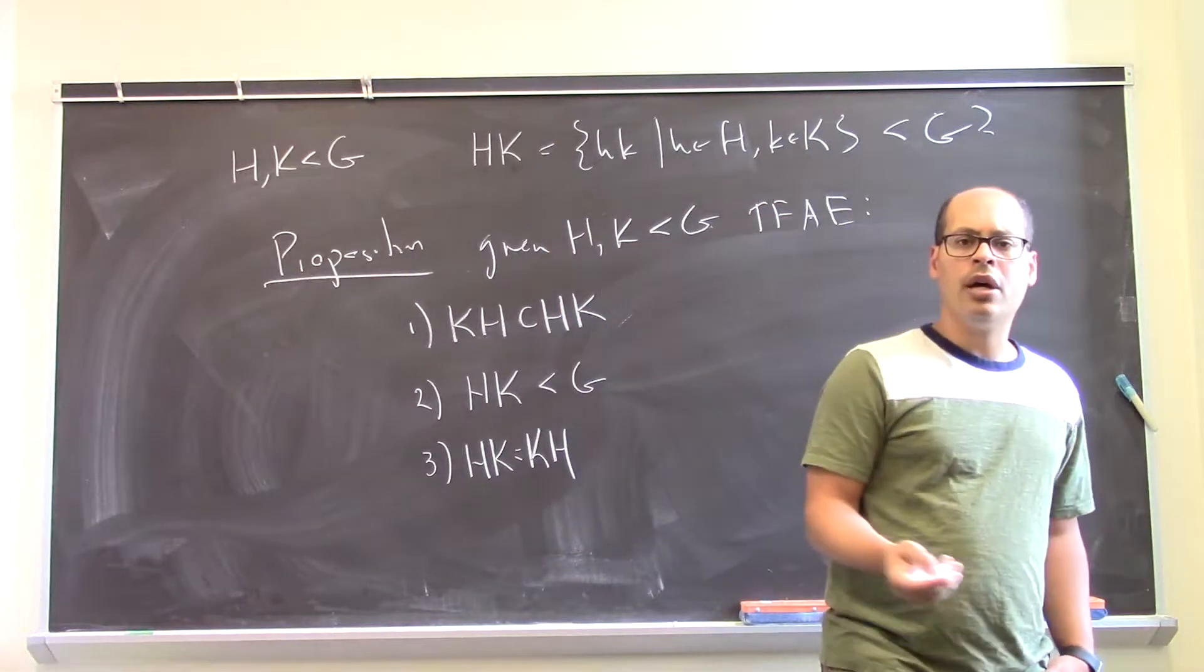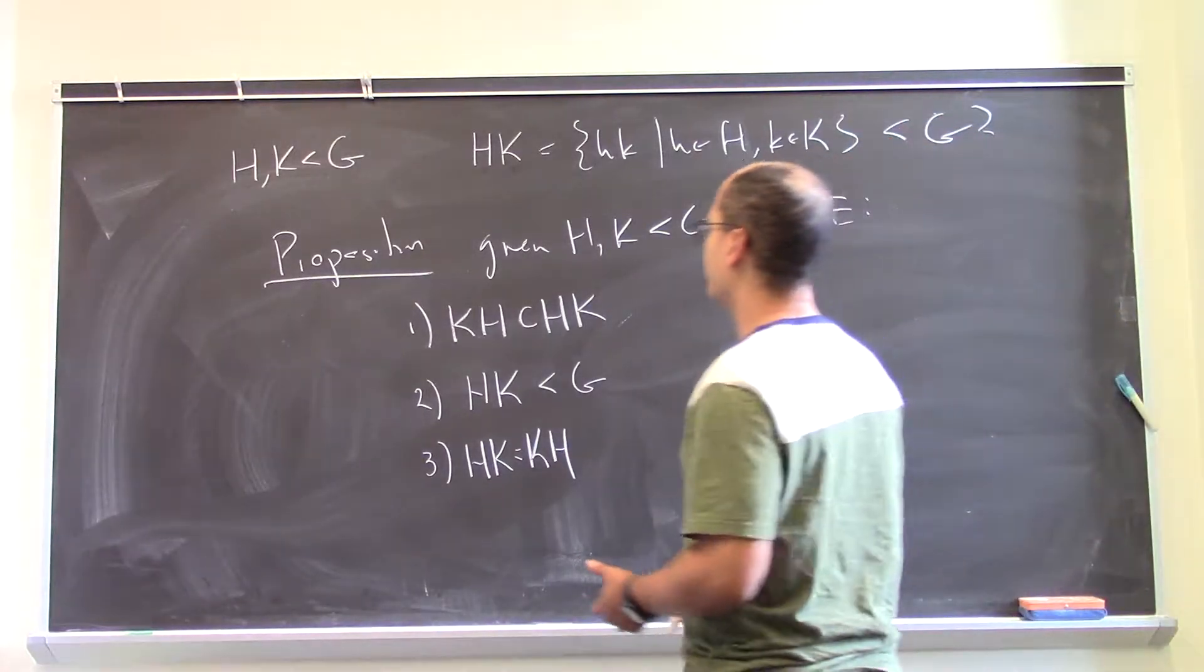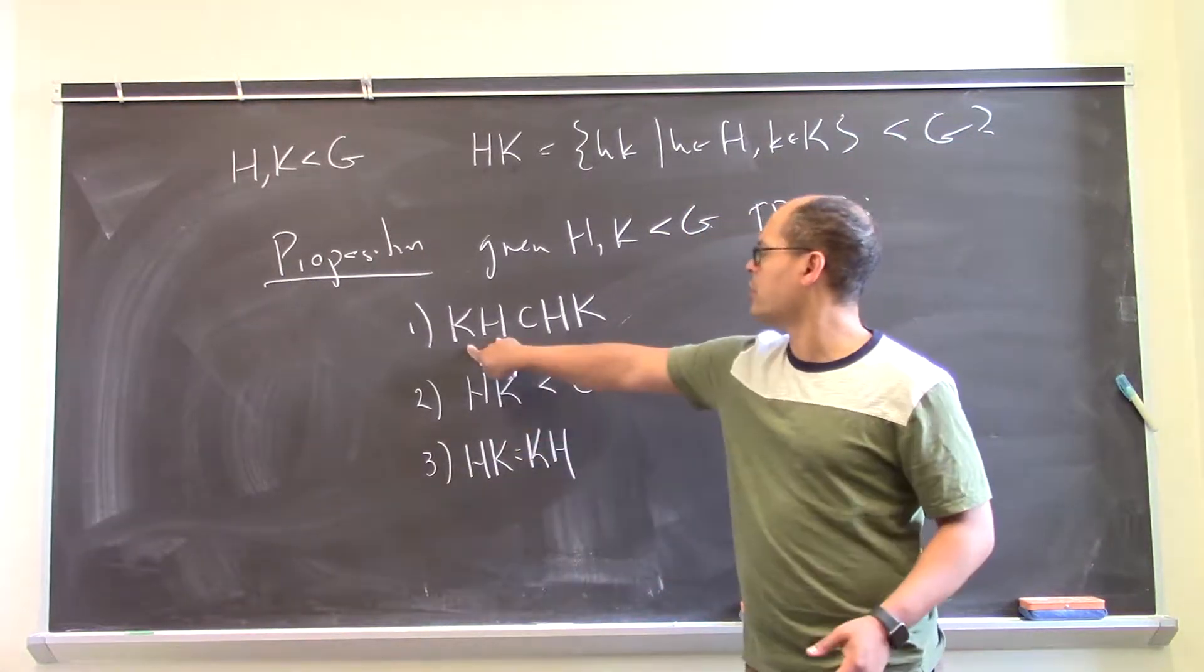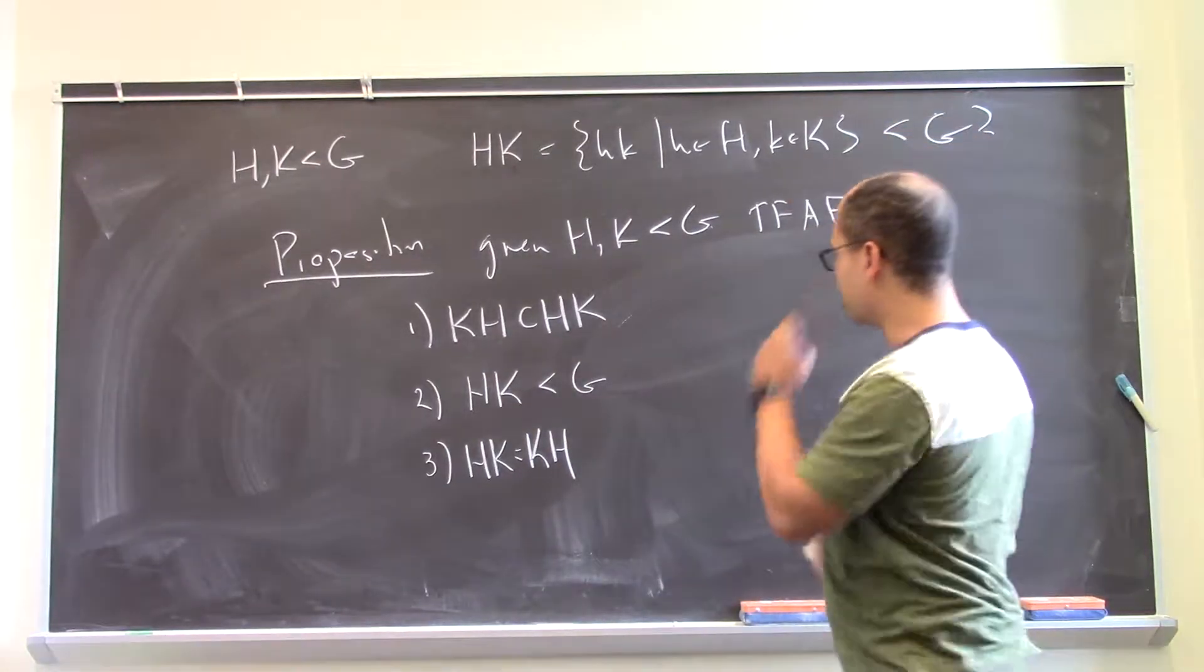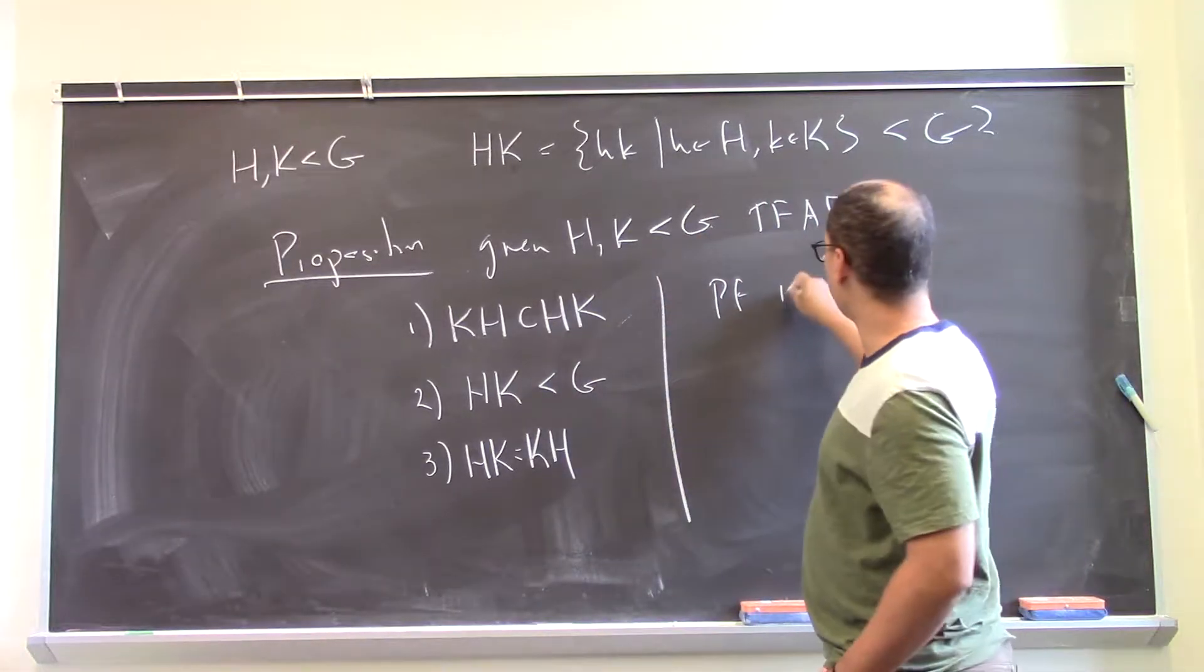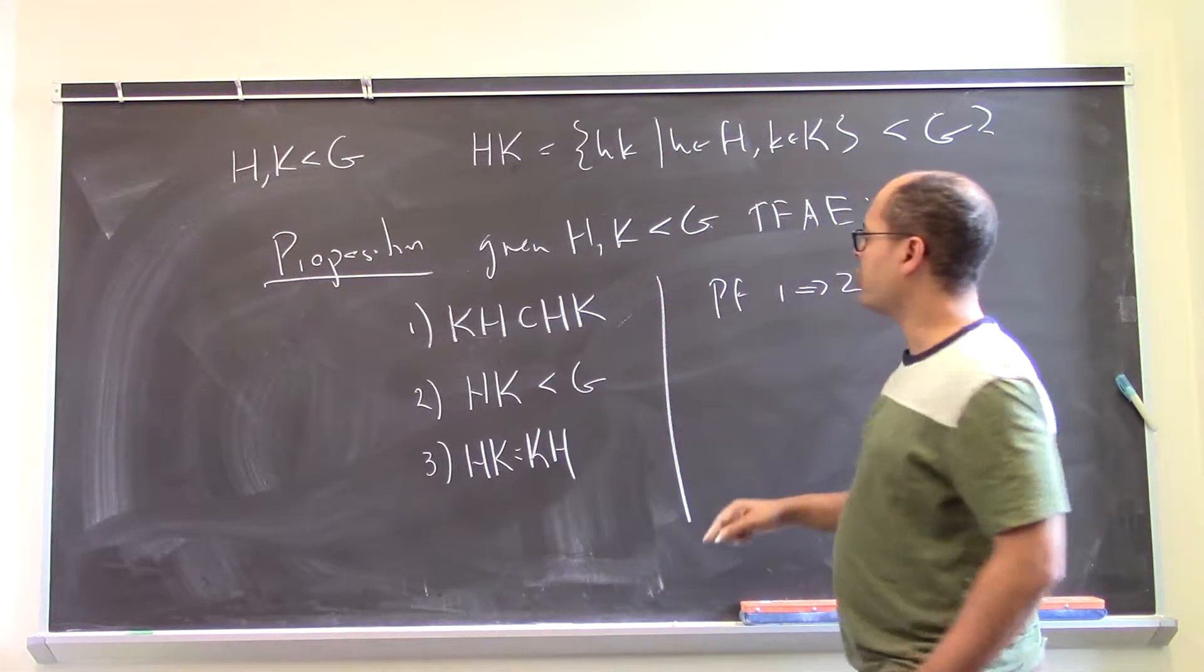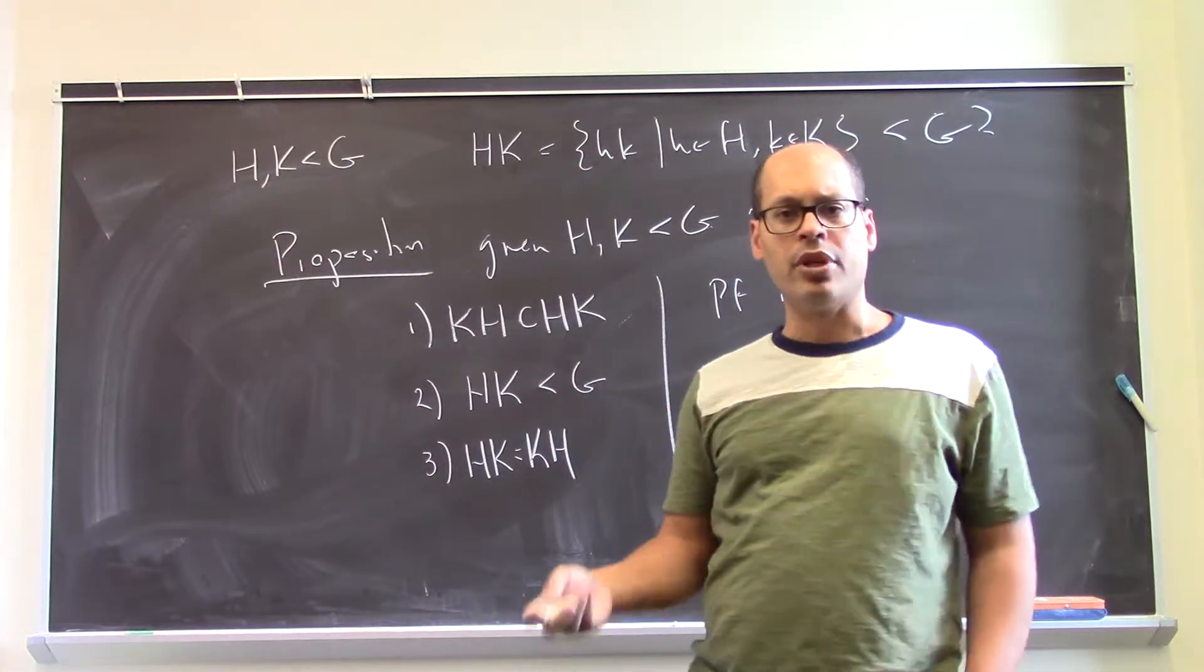So when do a product of two subgroups give you another group? Well, if when you write things in the wrong order, you could rewrite them in the correct order. Okay. So let's just do this proof. So let's say one implies two. So if KH is contained in HK, I want to show I have a subgroup. So what does that mean?